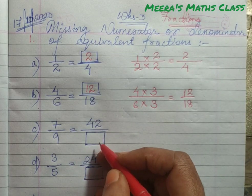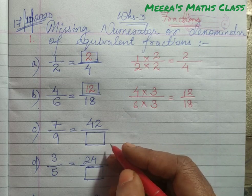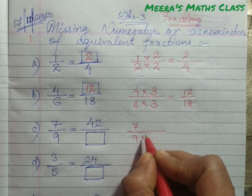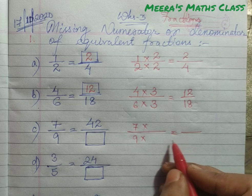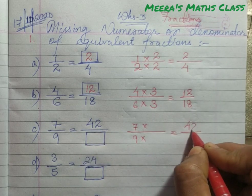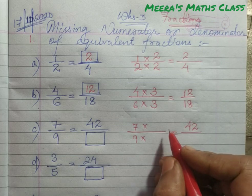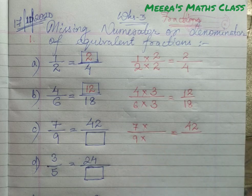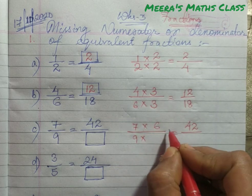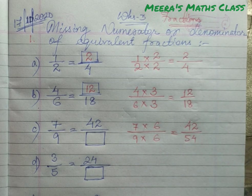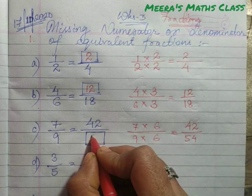In the same way, if the denominator is missing, how to find out? Same — we are going to write 7 by 9 into how much, so that we are getting the numerator as 42. Whatever is given, that we are going to write it first, and from the given one, we are going to find out which is not given. Remember: given to not given, or given to asked. 7 sixes are 42, so 9 sixes are 54. Here we are going to write 54.